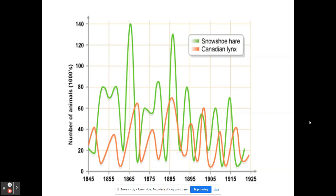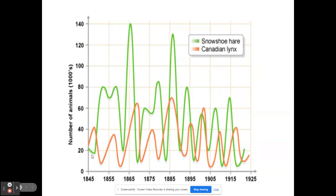Now getting on with this predator-prey relationship. Right here we have the snowshoe hare and the Canadian lynx. This graph shows the number of animals in thousands on the y-axis from the years 1845 to 1925. We're looking at a comparison between the snowshoe hare in the green line and the Canadian lynx in the orange line. We can see that when the lynx population goes down, there's a delayed reaction, and when the snowshoe hare population goes up, the Canadian lynx population goes up after a delay. We see this repeated multiple times throughout this graph.